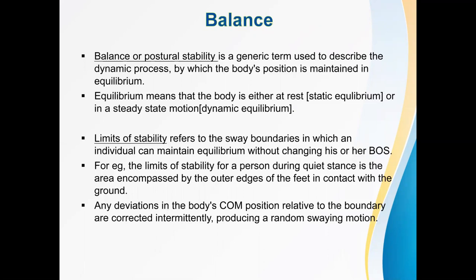Next is limits of stability. This is basically the sway boundaries in which an individual can maintain equilibrium without changing his or her base of support, while these boundaries can change according to the task. Any deviations in the body's center of mass position related to the boundary are corrected intermittently, producing a random swaying motion.